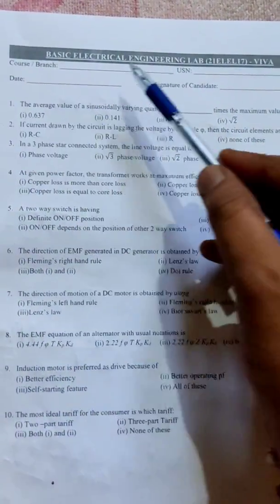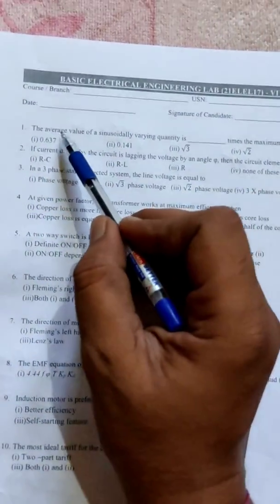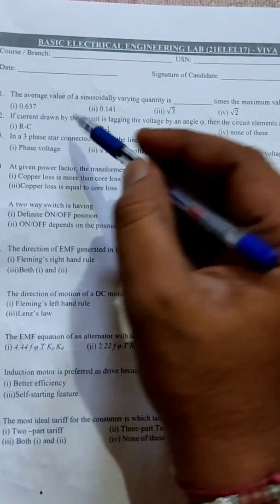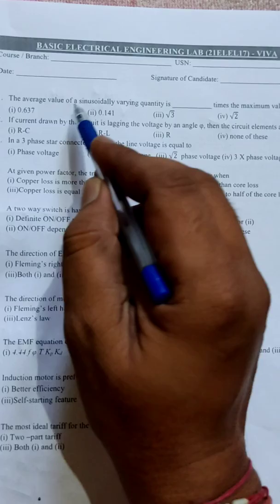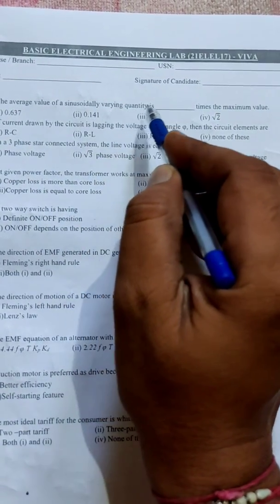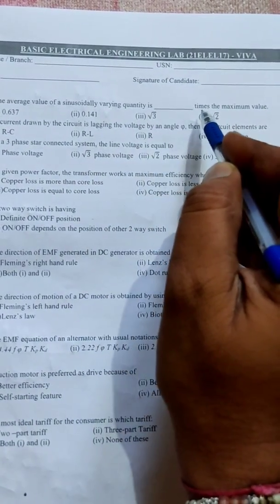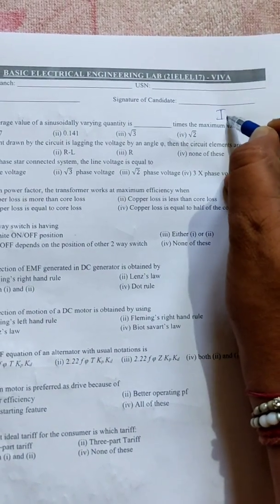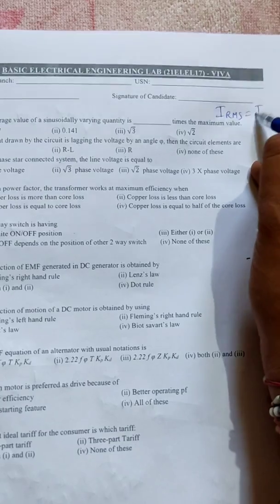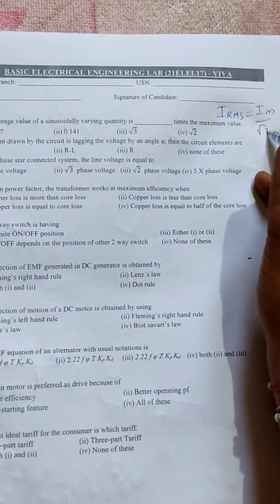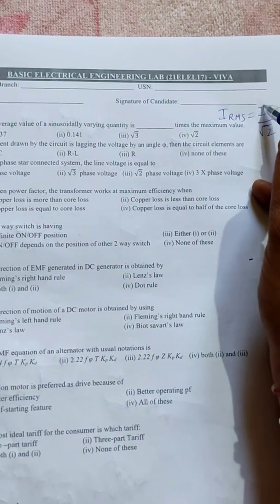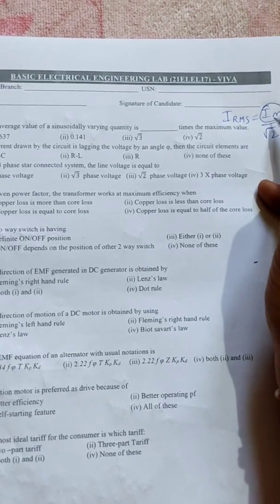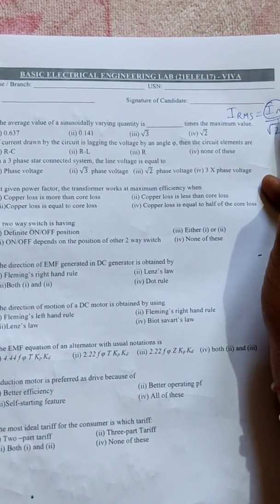I don't know which college material this is. Some questions are good. Let me read the first question. The average value of a sinusoidal varying quantity is dash times the maximum value. You can remember RMS value formula. What is RMS value of a sinusoidal waveform? Vm by root 2.